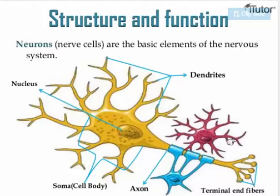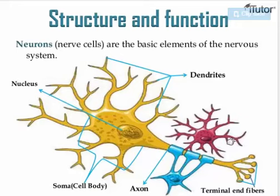The autonomic nervous system is responsible for your respiration, your circulation, and your digestion. So somatic means you control it, while autonomic means it is not under your control. The autonomic nervous system also has two parts: the sympathetic nervous system and the parasympathetic nervous system.